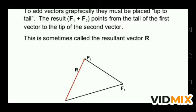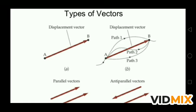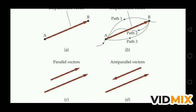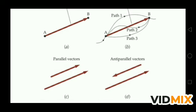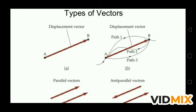This is the way to add any vector quantity using graphical representation. Now, how many types of vectors are there? The first type is a displacement vector, which has a tail at point A and a head at point B. Two vectors in the same direction are called parallel vectors. Two vectors opposite in direction are called anti-parallel vectors. The displacement vector is always the straight-line path from A to B, regardless of the actual path taken.